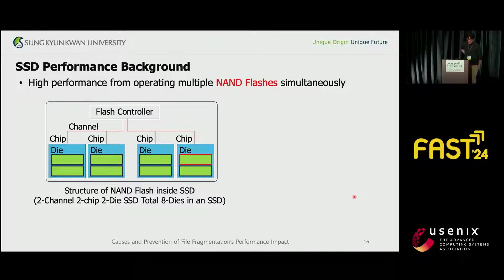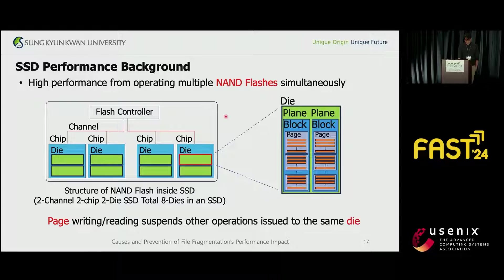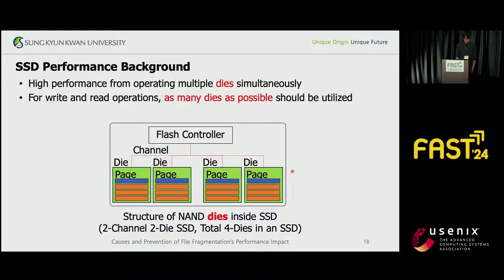We believe that the root cause of this problem lies in the internals of SSDs. Modern SSDs' remarkable performance is achieved through their internal parallelism. An SSD these days has lots of flash memory chips inside, connected to the flash controller through channels. In a chip, there are multiple dies. A die is an independent unit to process a read and write operation, so multiple dies can operate at the same time. Inside a die, there are multiple blocks, and inside a block, there are multiple pages. A page is the smallest unit to read and write. If a page in a die is being written or read, no other pages can be written or read on the same die. So it is crucial for performance to make every die work in parallel as much as possible.